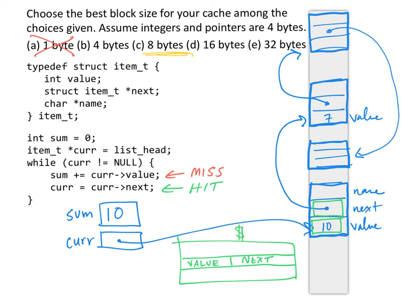And if eight bytes is good, is 16 bytes even better? Well, what would a 16-byte block size bring in for us? It would actually bring in not only value next, but name and whatever mystery four bytes of data live after name and memory.